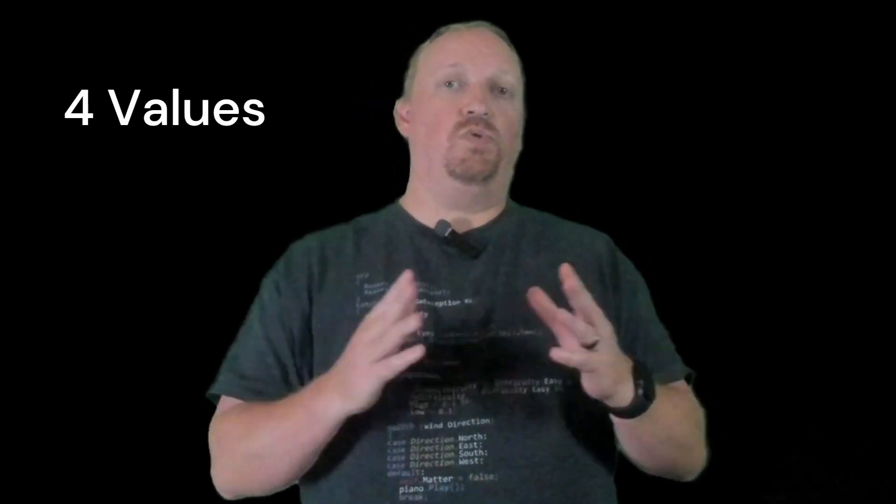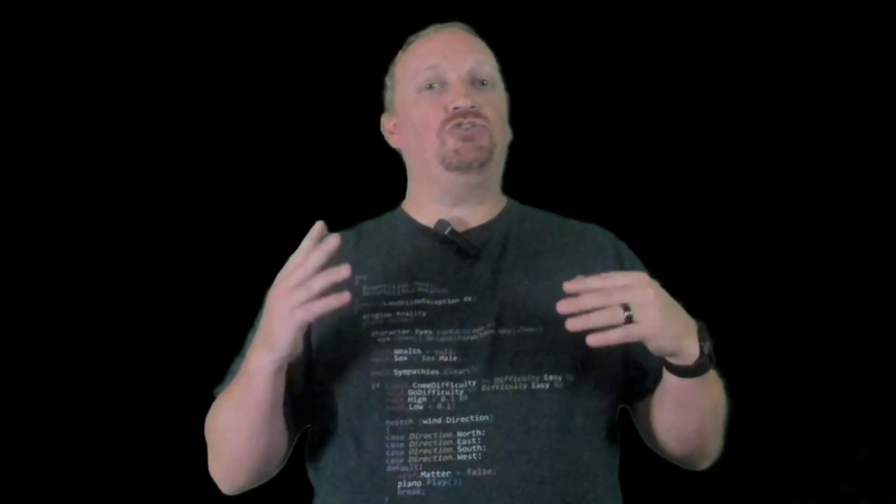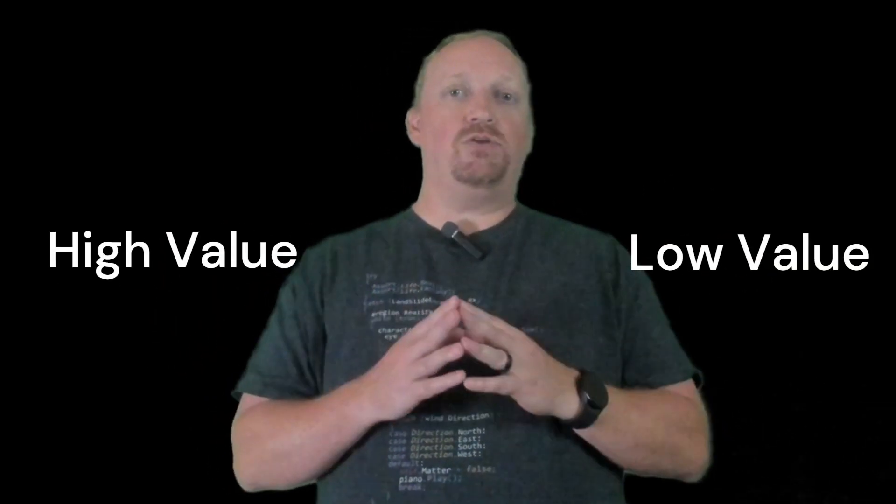Agile software development is a simple set of four values and 12 principles. The four values of agile are actually juxtapositions of things we should value highly versus things we shouldn't value as much. These four values become the backbone of an agile mindset. You should learn them and I would even suggest memorizing them so that you can comfortably discuss how you want to work with others in an agile way.